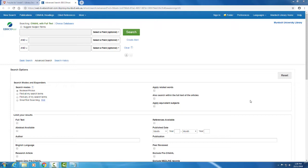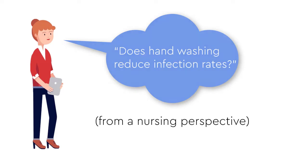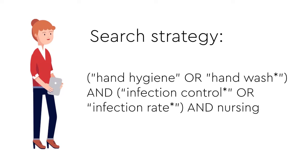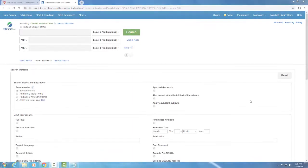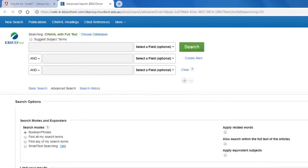If you have a pre-constructed search strategy, you can just pop it into the first row and click search. For example, I'm trying to answer the question: does handwashing reduce infection rates from a nursing perspective? I've created a very simple search string using boolean functions, quotation marks, and truncations. I will use this as my single line search.